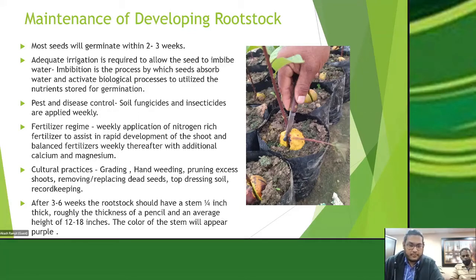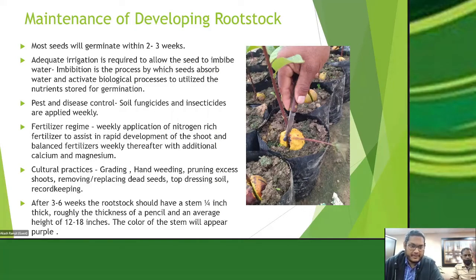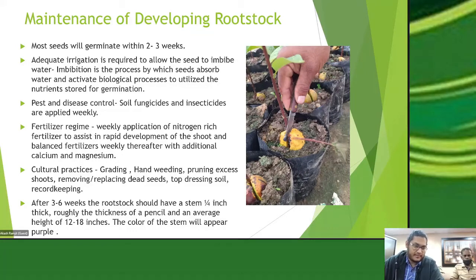While the shoots develop, we apply fungicides and insecticides weekly to prevent pests or disease from affecting the young plant. We also apply fertilizer weekly. In the initial stages when trying to thicken the rootstock plant up for grafting, we apply a nitrogen-rich fertilizer. After grafting and development, we give it more balanced fertilizers with added calcium and magnesium. Throughout the process we grade the plants according to size and stage of development, since not all rootstock seedlings will be ready for grafting at the same time.